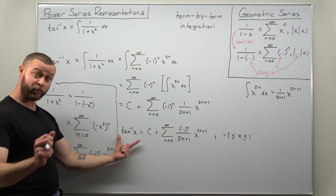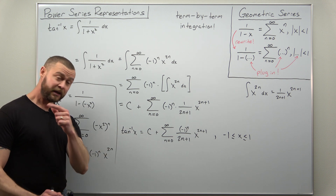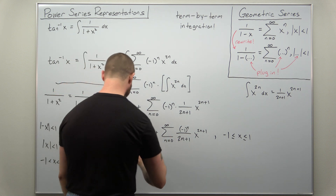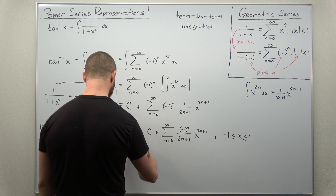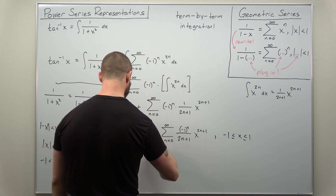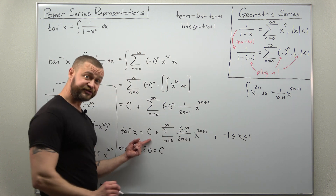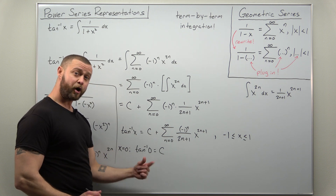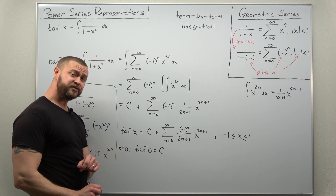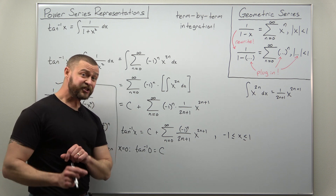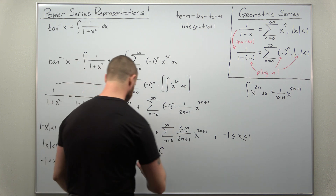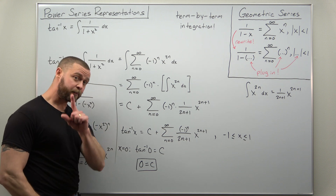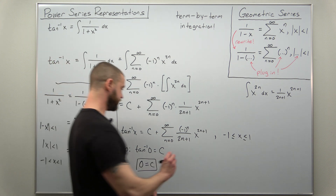Now we're going to plug in a value that will be easy to evaluate inverse tangent of x at and also simplify the powers of x — that value is zero. If you plug in x equals zero, we get inverse tangent of zero equals c, since zero to any power is zero. Recalling basic trig, inverse tangent of zero is zero because tangent of zero equals zero. So we get that c equals zero.